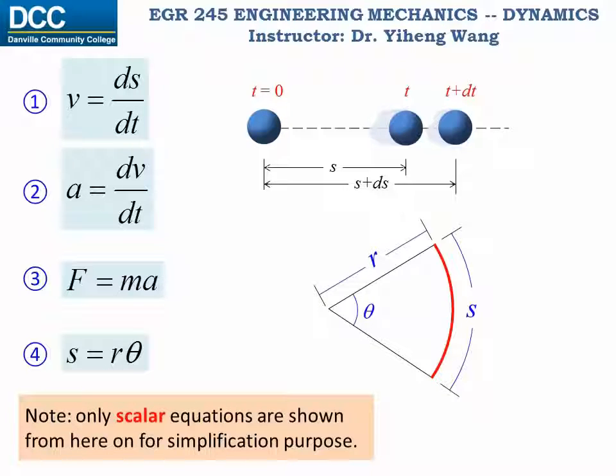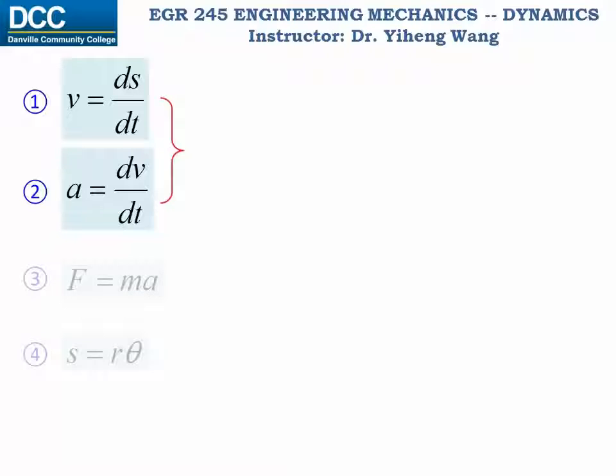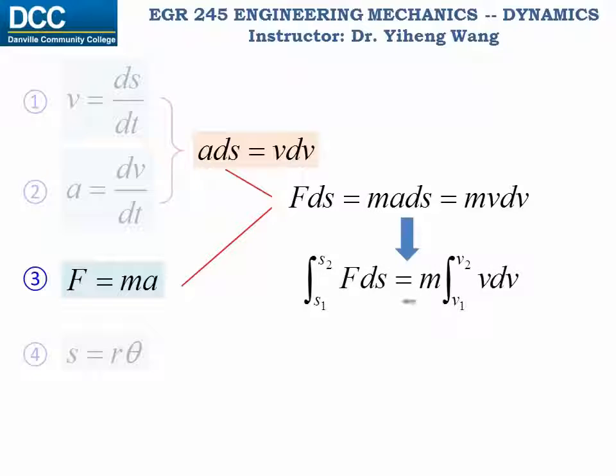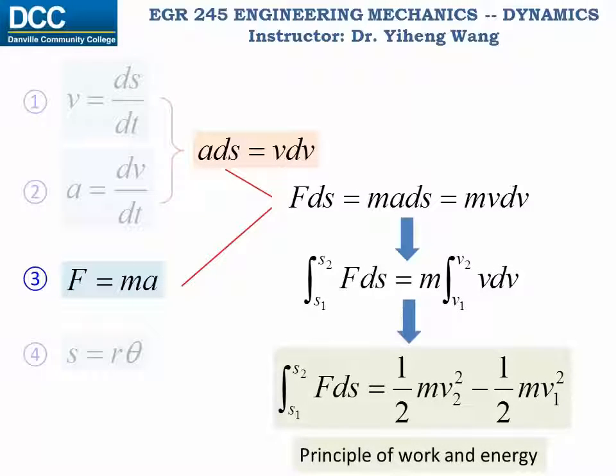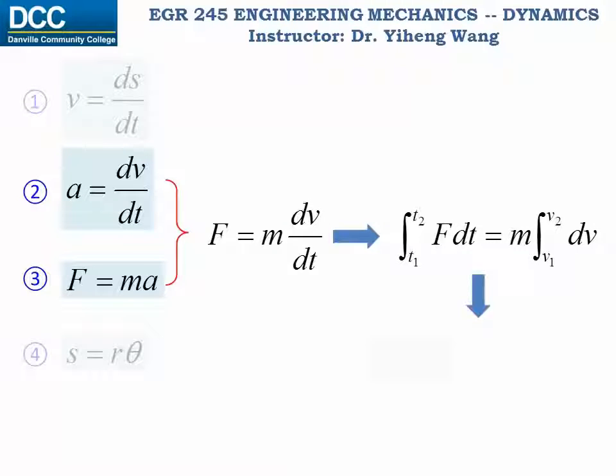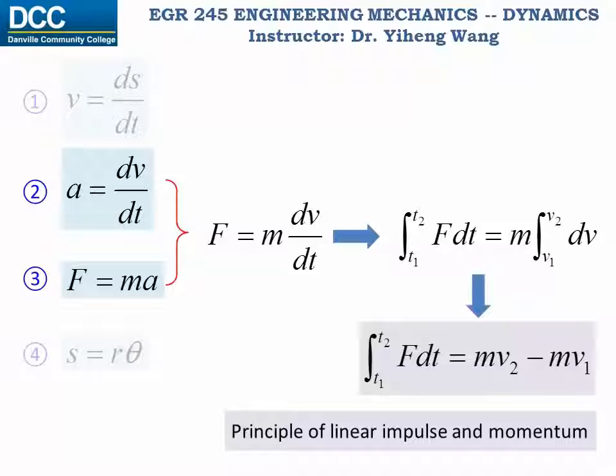The reason why I said I think these are the only four most fundamental formulas in this class is because most other formulas in this class can be derived from these four. For example, if you combine these two equations by canceling out dt, then you get the third kinematic equation. If you take this newly derived equation, combine it with Newton's second law, integrate, you will get this equation, which is the principle of work and energy. If you combine these two, and then integrate, you can get this equation, which is the principle of linear impulse and momentum.